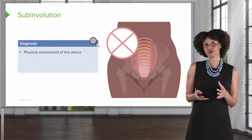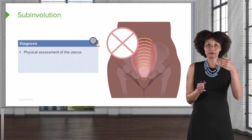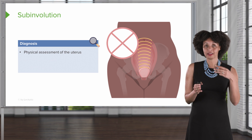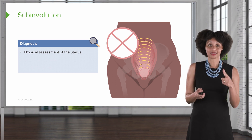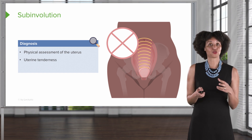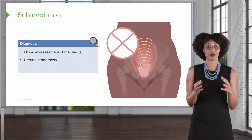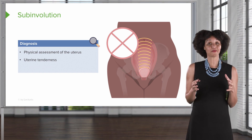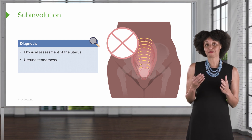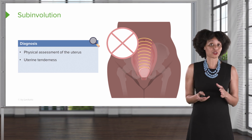How do we diagnose subinvolution? We measure the descent of the uterus — it should go down by one finger's breadth every day, so if it's not, that's subinvolution. We may also find the uterus is extremely tender, as it has been working hard to contract back to a non-pregnant state but something is stopping that process. If infection is the reason for the subinvolution, that will also make it very tender.